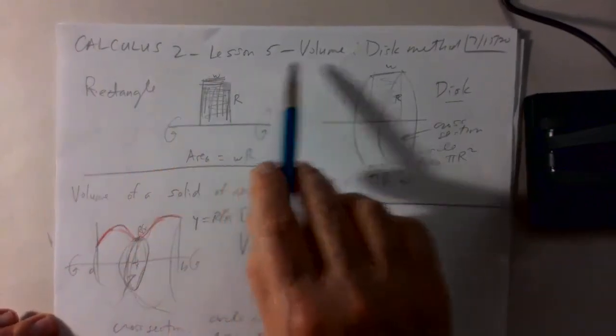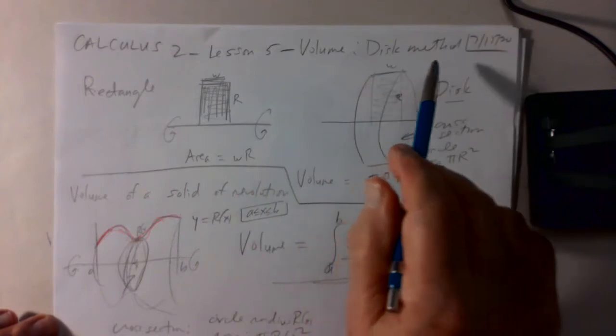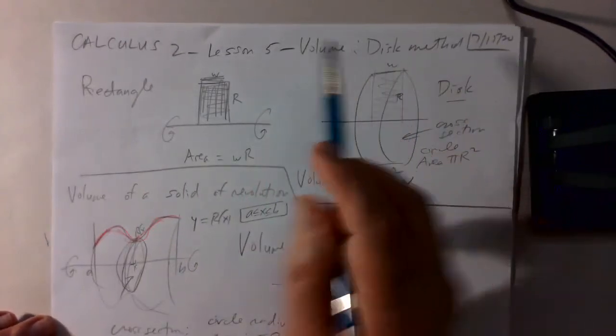Calculus 2, Lesson 5: the volume of a solid of revolution using the disc method.